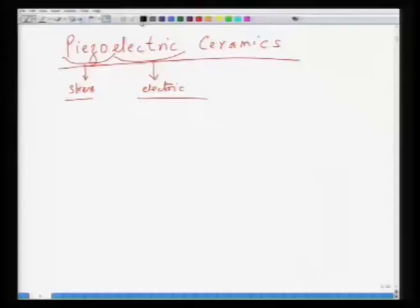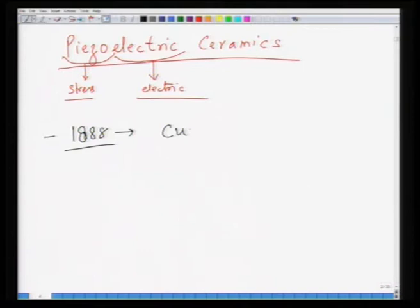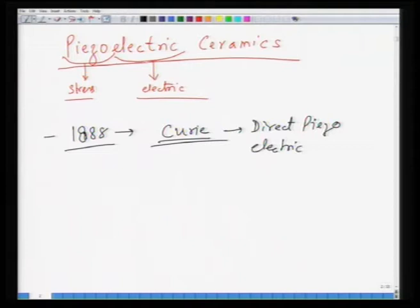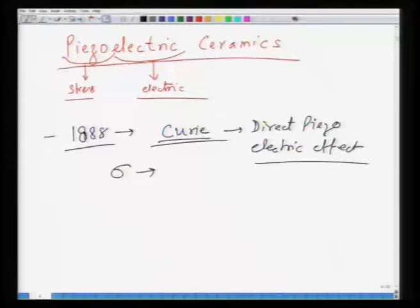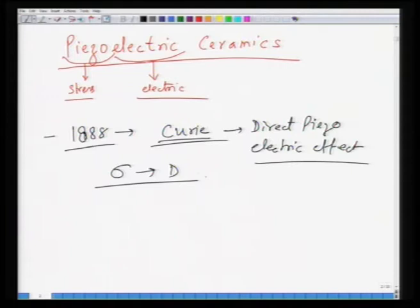Piezoelectricity was discovered in 1880 by the Curie brothers. This was later called the direct piezoelectric effect — some materials having the capability to create an electrical potential in response to the application of mechanical stress. What was observed was that applied stress gave rise to a polarization, a field, or some electrical response.